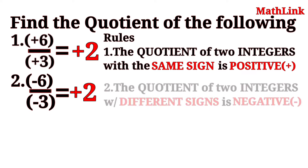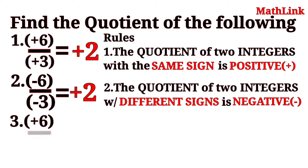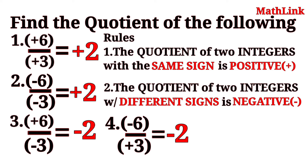Rule number 2: The quotient of two integers with different signs is negative. Number 3: Positive 6 divided by negative 3 is equal to negative 2 — negative sign because the two integers have different signs. Number 4: Negative 6 divided by positive 3 is equal to negative 2 — negative sign because the two integers have different signs.